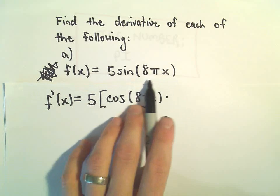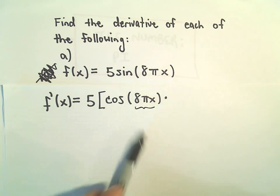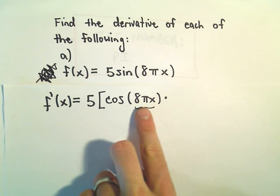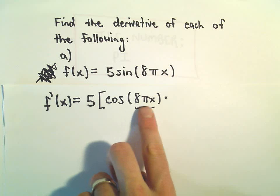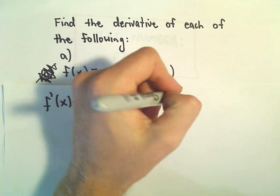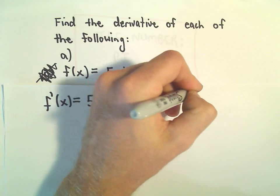Well, again, if it just said 8x, the derivative of 8x would just be 8. But that's not our number. The number we do have is 8 times pi. So, the derivative of that will just be 8 times pi.